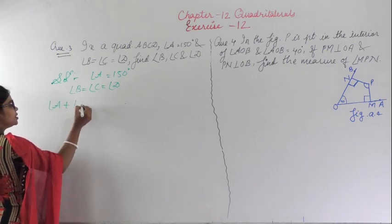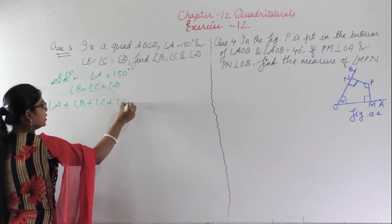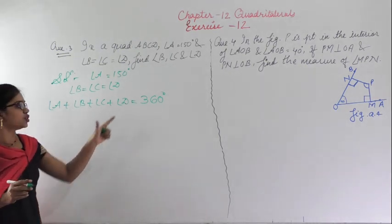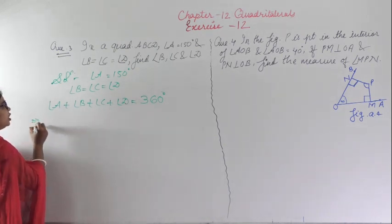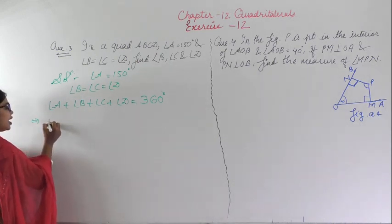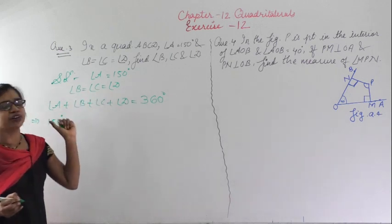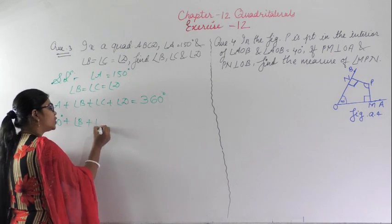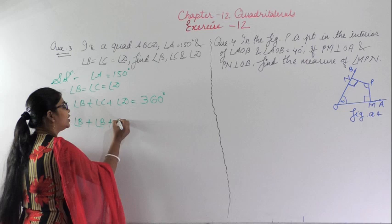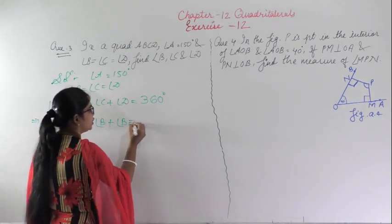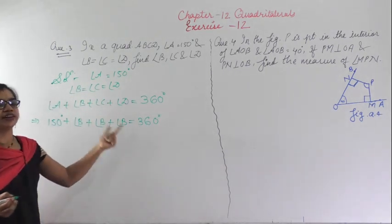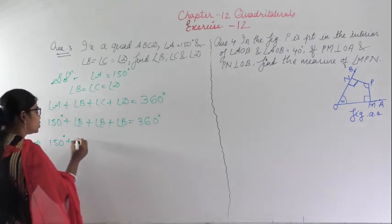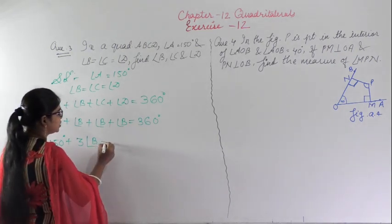Substituting, angle A is 150 degrees. Since angle B equals angle C equals angle D, we can write 150 degrees plus 3 times angle B equals 360 degrees. So 3 angle B equals 360 degrees minus 150 degrees, which gives 3 angle B equals 210 degrees.